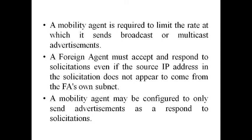Typically a mobile node can send only a few solicitation messages, which should not flood the network. A foreign agent must accept and respond to solicitations even if the source IP address in the solicitation does not appear to come from the foreign agent's subnet — even if it is unable to identify the source IP address, the foreign agent has to accept and respond to the solicitation messages.